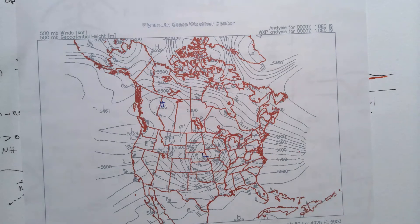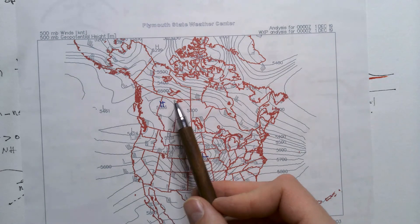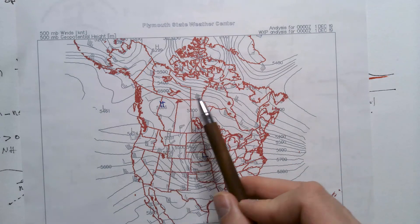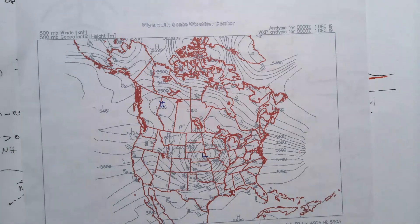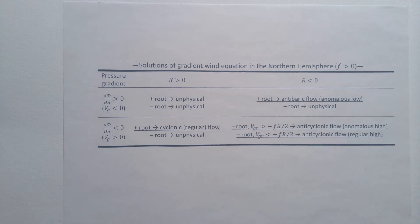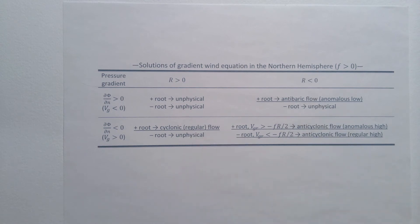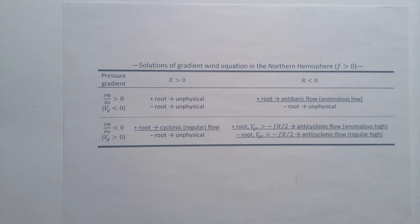An important caveat: this does not mean cyclones cannot have broad, weak-wind structures. Cyclones can be broad and wide with weak winds. The key point is that anticyclones cannot have steep pressure gradients and strong winds near their centers — that is what this analysis establishes.